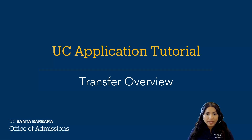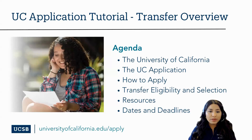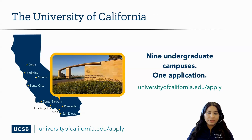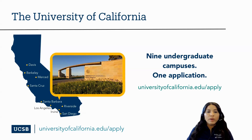Hello, and welcome to the UC Application Overview for Transfer Students by the Office of Admissions at UC Santa Barbara. This video will share some things you should know about the UC application, transfer eligibility and selection, how to apply, resources for transfer students, and important dates and deadlines. The University of California is comprised of ten incredible campuses, with nine being primarily undergraduate-focused universities located throughout California, each offering its own uniqueness.